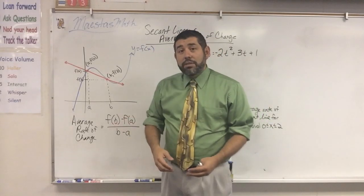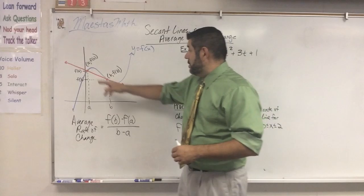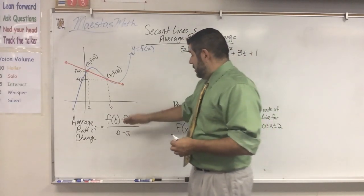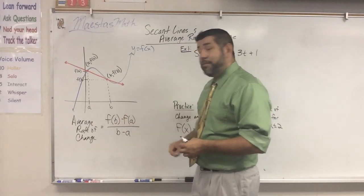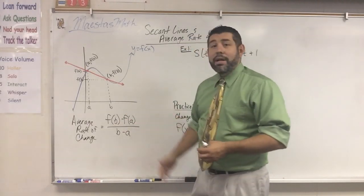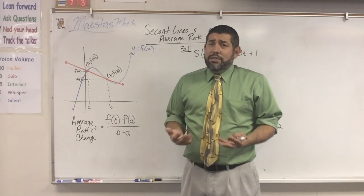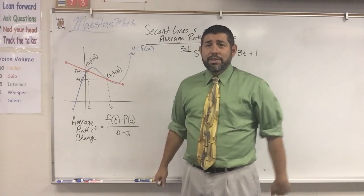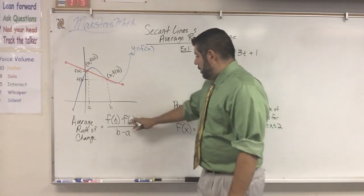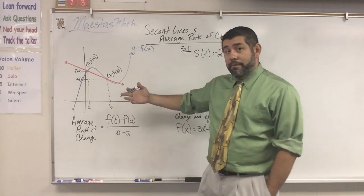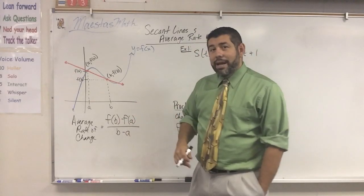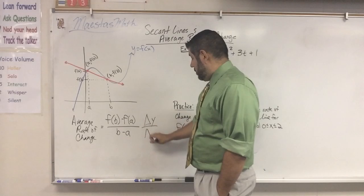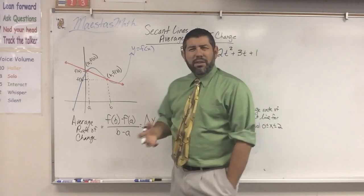The average rate of change between two points — we're going to use the secant line, find the slope between those two points. The formula is f of b minus f of a over b minus a. It's just a slope formula — y2 minus y1 over x2 minus x1 — just disguised. We're going to plug in b and a into our function, and then divide by the difference of the x values. This is the change in y over change in x — same thing as slope.